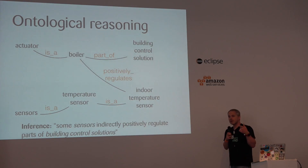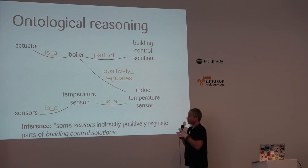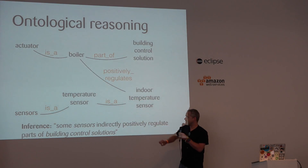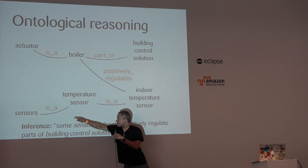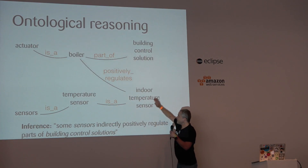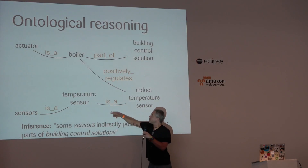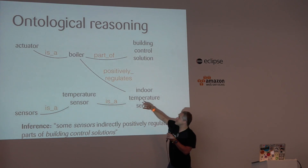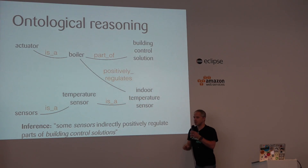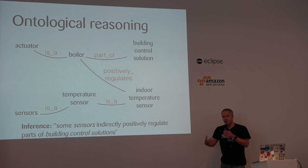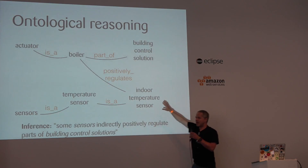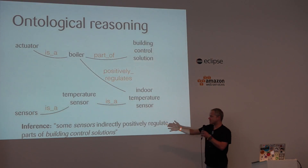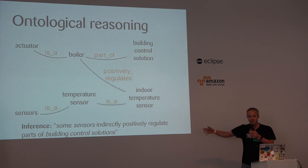Ontologies are useful because you can do ontological reasoning. Here I've drawn a couple of relationships that might be implicitly encoded in my ontology. For example, a temperature sensor is a sensor. An indoor temperature sensor is a temperature sensor. That temperature sensor positively regulates the boiler, which is part of a building control solution. You can then do inference. This is what I have to specifically tell the computer; this is what it can infer: some sensors indirectly positively regulate parts of building control solutions.